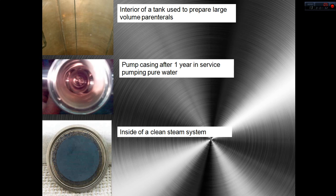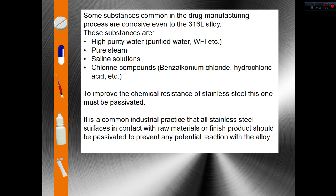There are many substances common in drug manufacturing that are corrosive to stainless steel. Some examples include high purity water — that could be purified water, water for injection, or any other kind of water — as well as pure steam, saline solutions, and chlorine compounds. That's why when we are using stainless steels, we want to get the best out of this alloy.